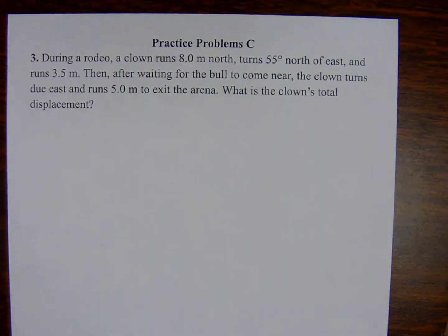Practice problem number 3 associated with problem C. During a rodeo, the clown runs 8 meters north, turns 55 degrees north of east and runs 3.5 meters. Then, after waiting for the bull to come near, the clown turns due east and runs 5.0 meters to exit the arena. What is the clown's total displacement?